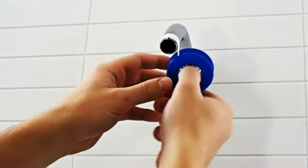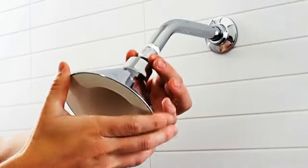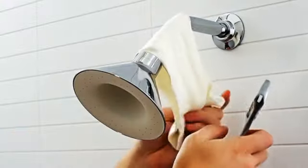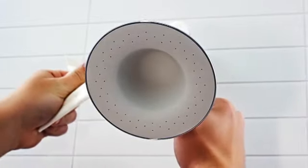Wrap new Teflon tape around the shower arm threads, then screw the Moxie shower head onto the shower arm by turning it clockwise. Place a cloth over the nut of the Moxie shower head and tighten the shower head with an adjustable wrench.